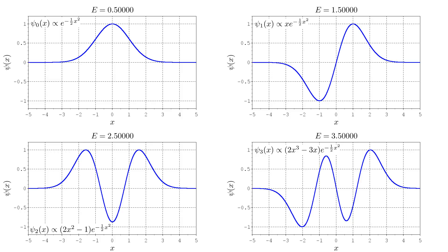Note that the lowest energy is not zero. The uncertainty principle does not allow the particle to be at a known location x equals zero, with a known momentum p equals zero.